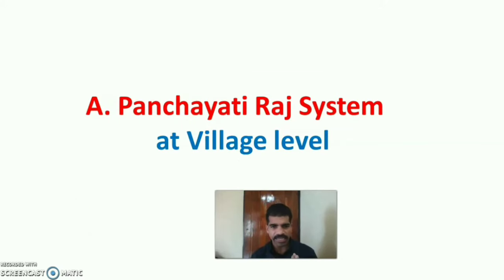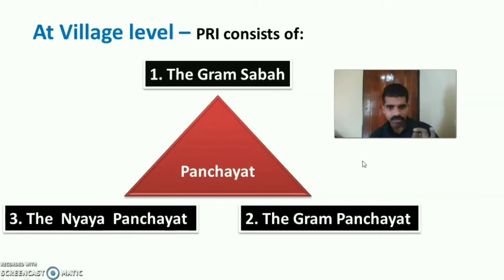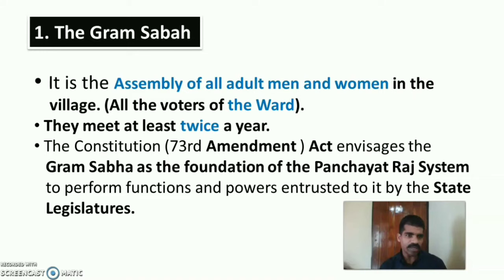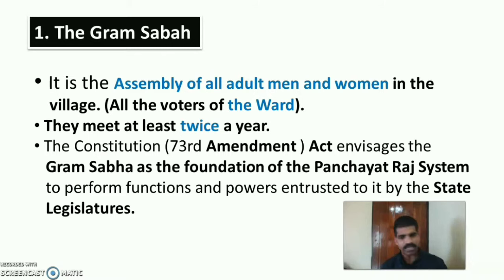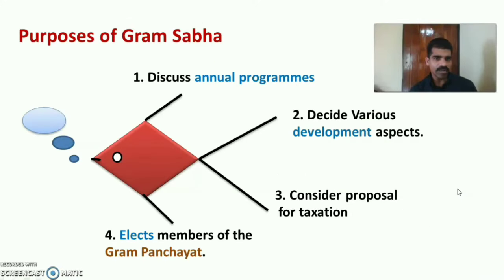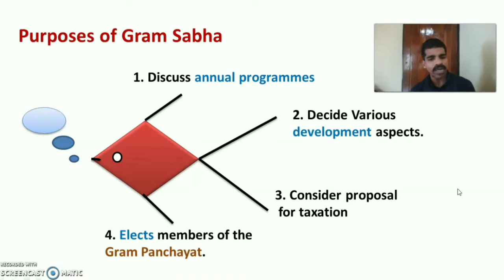At village level, the Panjayati Raj institution consists of Gram Sabha, Gram Panjayat and Nyaya Panjayat. Gram Sabha is the assembly of all adult men and women in the village — that means all the voters of the ward. They must meet at least twice a year, that is every six months. The Indian Constitution envisages the Gram Sabha as the foundation of the Panjayati Raj system to perform the functions and powers entrusted to it by the state legislature. Purposes of Gram Sabha: to discuss annual programs, to decide various developmental aspects for the village, to consider proposals for taxation, and to elect members for the Gram Panjayat.